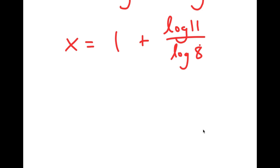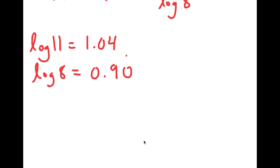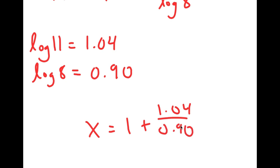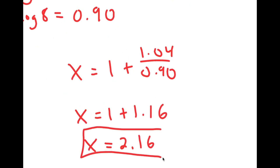All that's left is to plug in the actual values. Log 11 is approximately 1.04 and log 8 is approximately 0.90. So x equals 1 plus 1.04 over 0.90, which equals 1 plus 1.16, meaning x equals 2.16. So this is my answer.